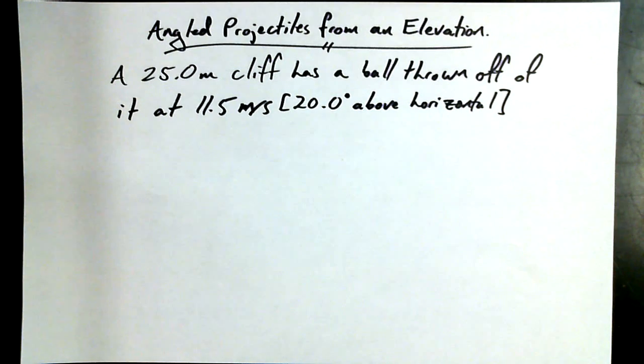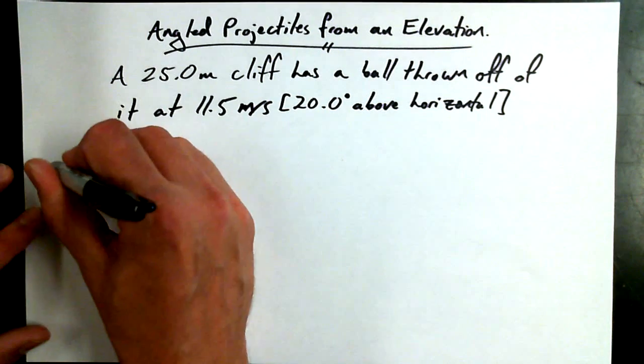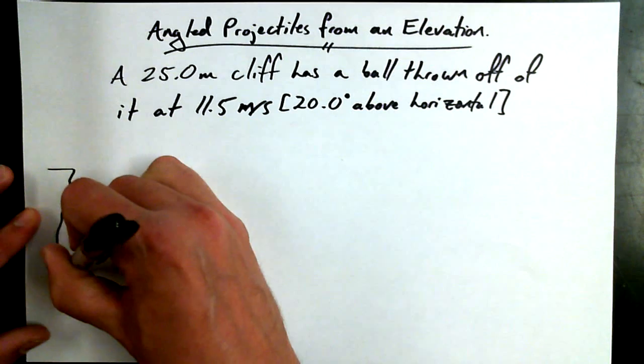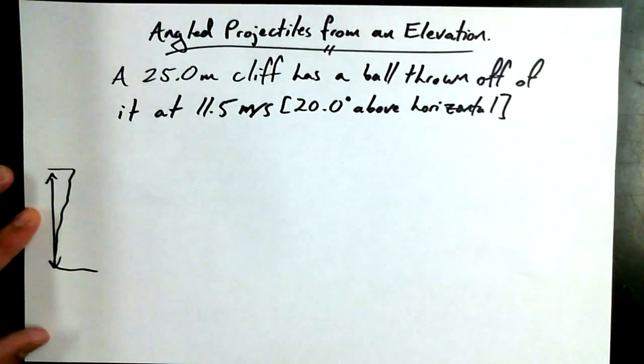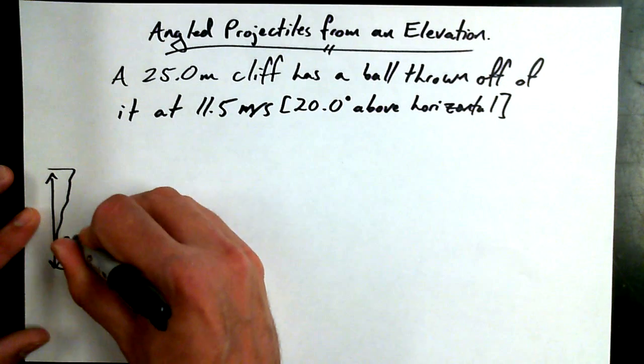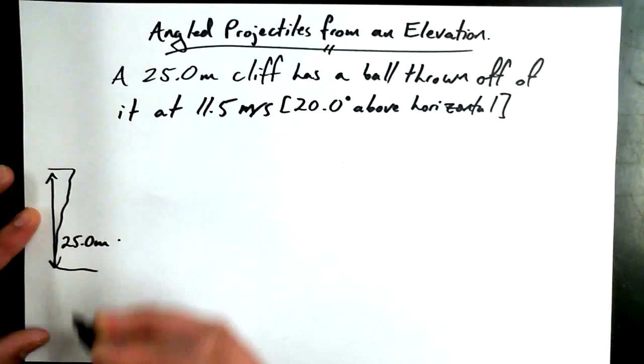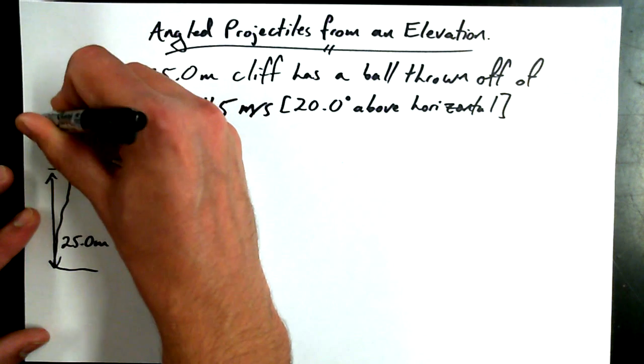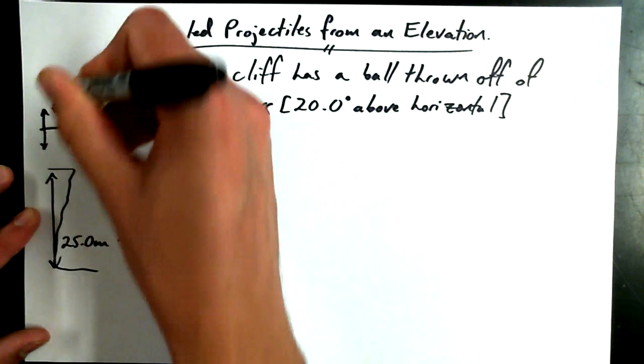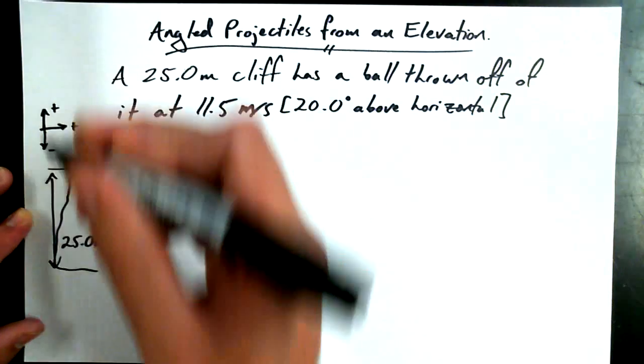So the scenario is we have a 25 meter tall cliff, a ball thrown at an angle of 20 degrees but with a speed of 11.5 meters per second, 20 degrees above the horizontal. So it looks a little something like this. We've got ourselves a cliff. I'm going to identify, just for fun, I'm going to make up be positive this time, and I'm going to make forward be positive, and down is going to be negative.